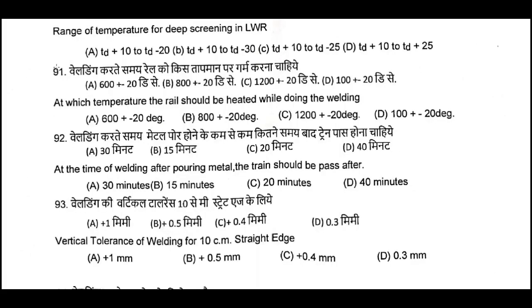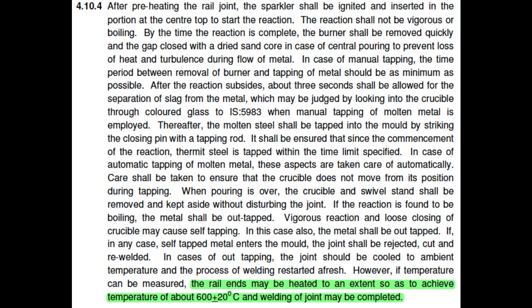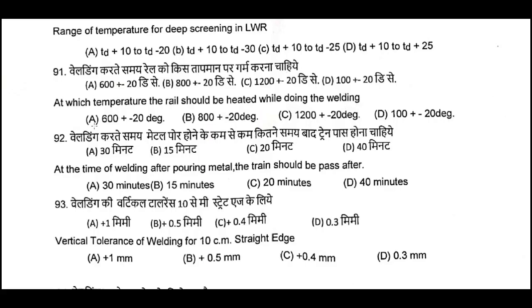Question Number 91: At which temperature should the rail be heated while doing welding? The rail should be heated while doing welding to a temperature of 600 plus or minus 20 degrees centigrade. Question Number 91, A is the correct answer: 600 ± 20 degrees centigrade.